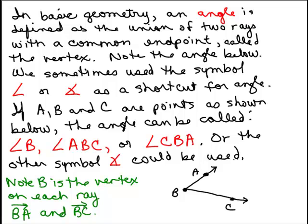So we've talked about line, we've talked about ray, and we need those two ideas to finally talk about what an angle is. In basic geometry, here's how we define an angle: it's the union of two rays with a common endpoint called the vertex.